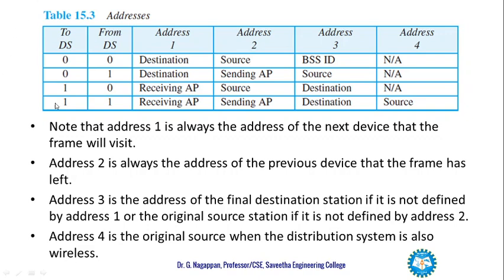This table denotes the four combinations of ToDS and FromDS: 0-0, 0-1, 1-0, and 1-1. Address 1 is always the address of the next device the frame will visit, and address 2 is always the address of the previous device the frame has left. Address 3 is the address of the final destination station if not defined by address 1, or the original source station if not defined by address 2. Address 4 is the original source when the distribution system is also a wireless device.